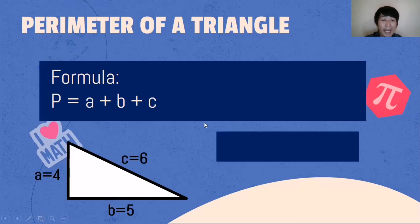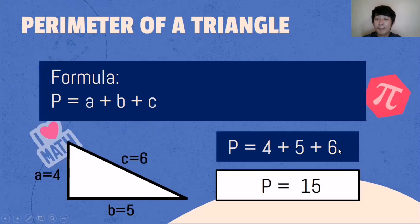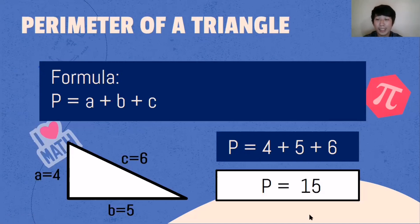So side A is 4, side B is 5, and side C is 6. So 4 + 5 + 6: 4 plus 5 is 9, plus 6 is 15. The perimeter of the given triangle is 15. The formula is Perimeter = A + B + C.